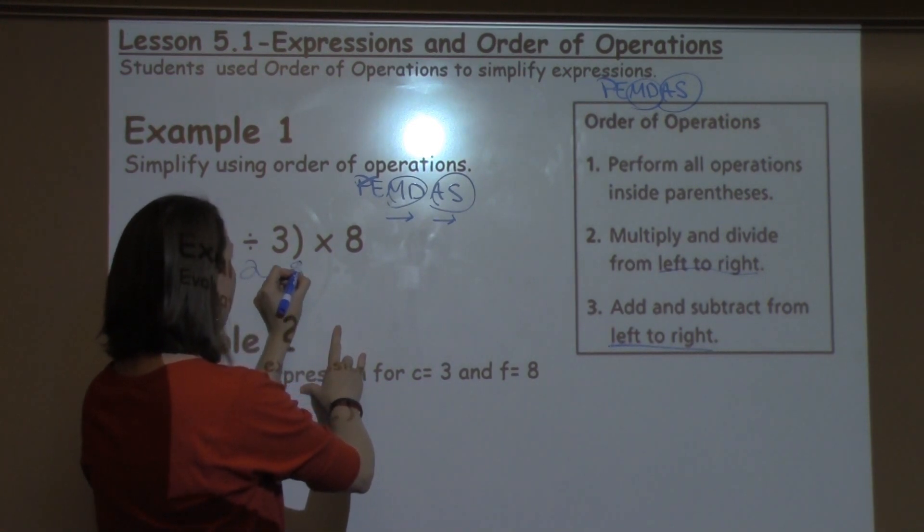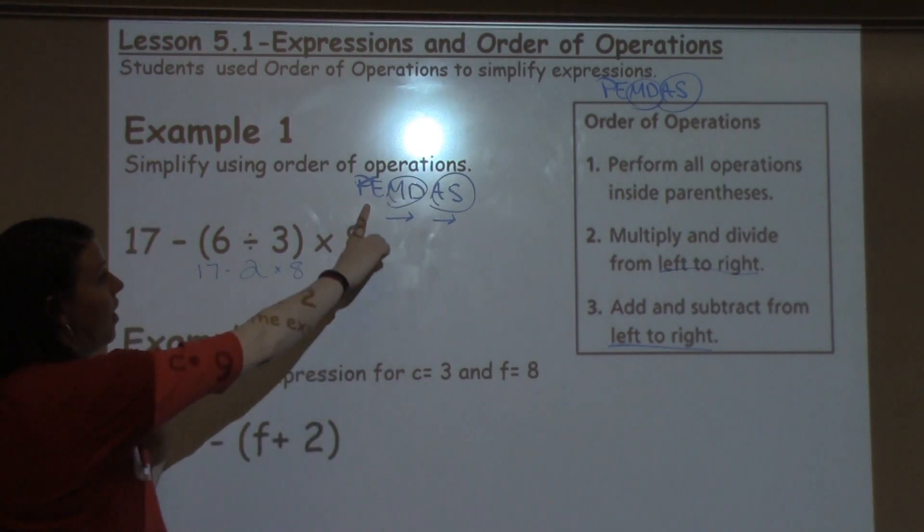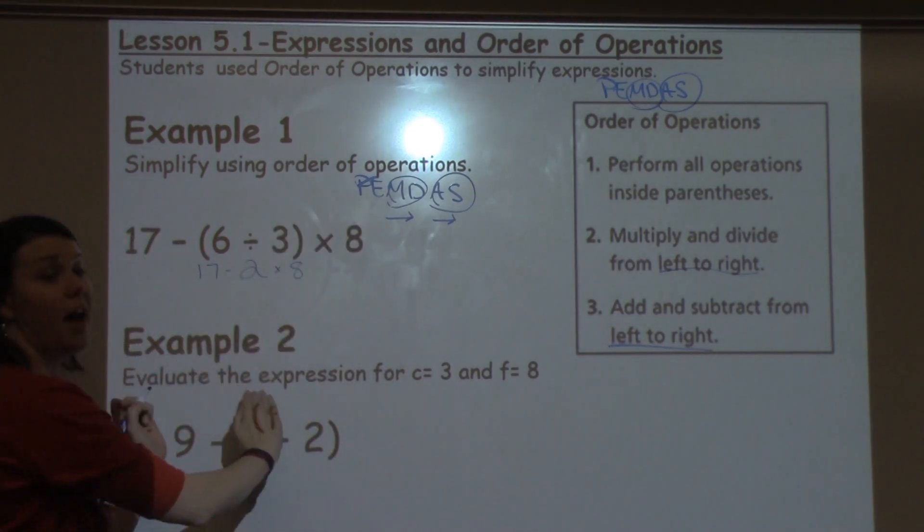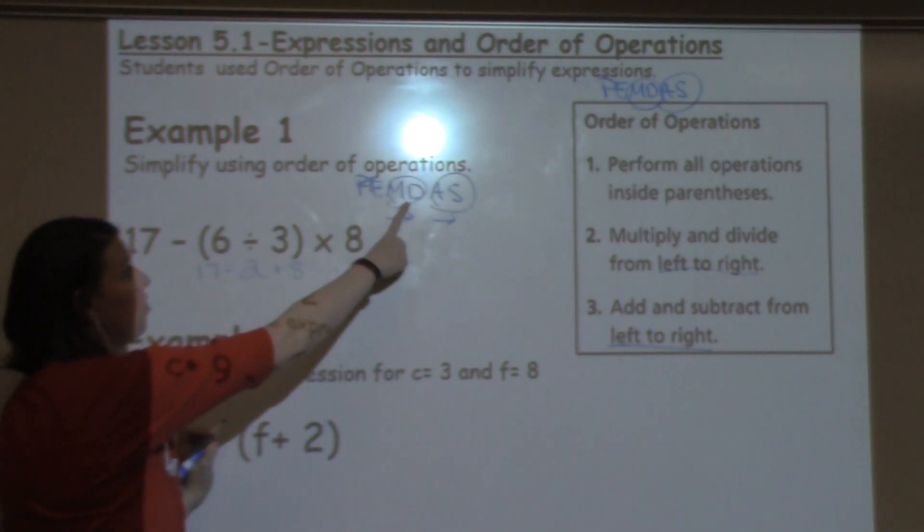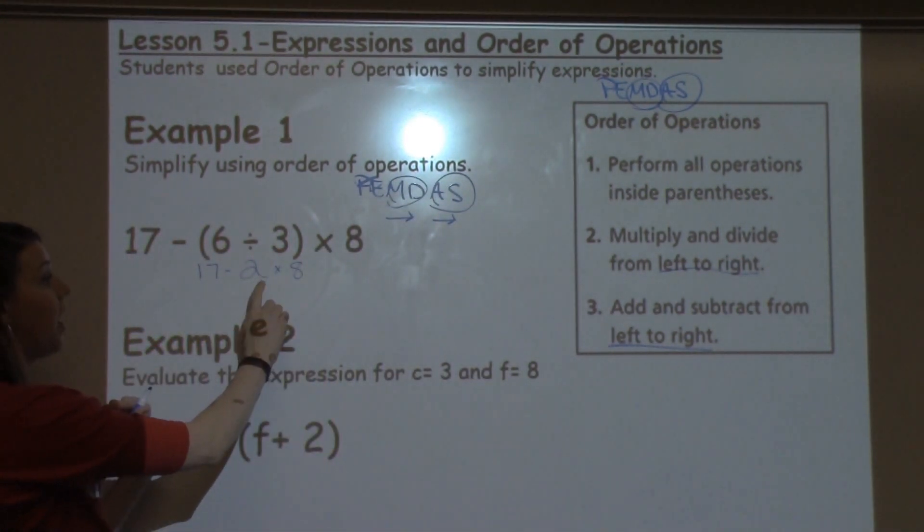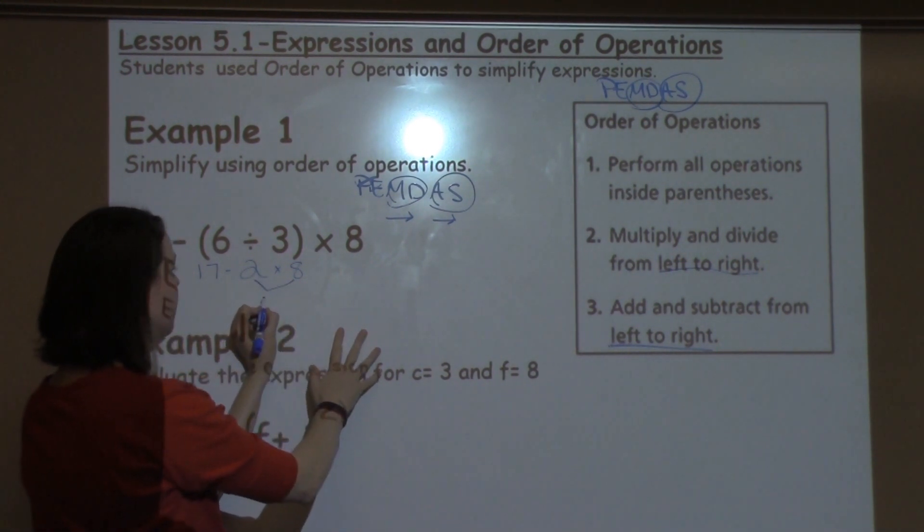I'm going to go ahead and rewrite the rest of my problem underneath it, and now I need to look at the E for exponents. I don't have an exponent, so I'm going to cross it off, and I need to look, do I have any multiplication or division? I do, I have multiplication right here, so I'm going to go ahead and solve this one. 2 times 8 is 16.